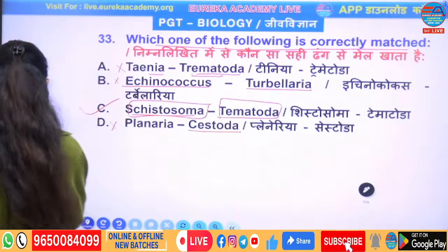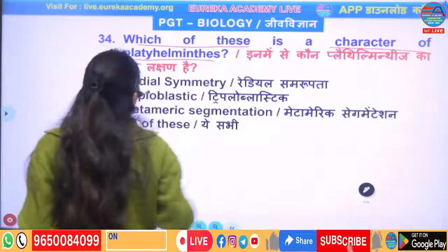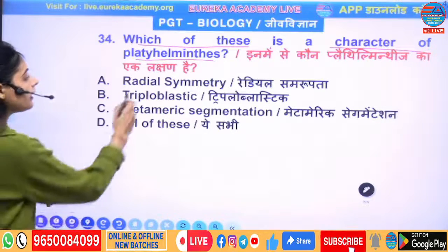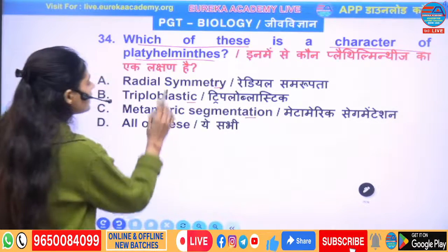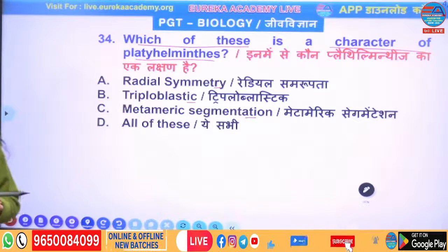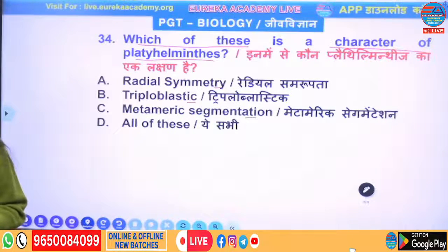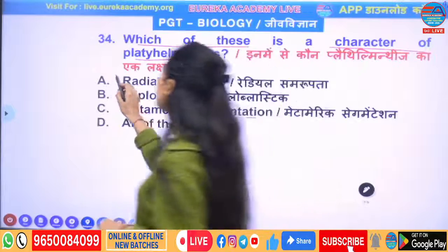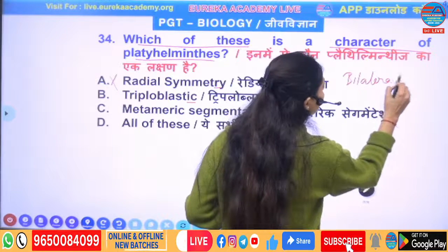Next question: which of these is a character of Platyhelminthes? The options are radial symmetry, body triploblastic, and metameric segmentation. The first option is radial symmetry, which is wrong, because Platyhelminthes show bilateral symmetry.